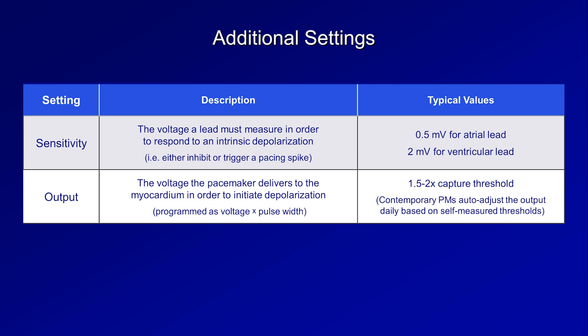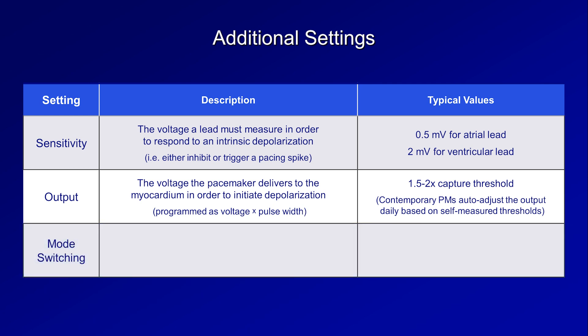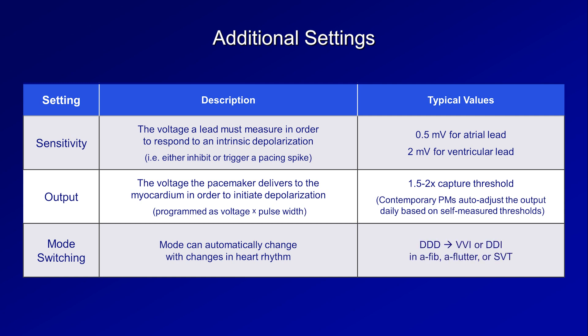The last additional setting of note is mode switching — a collection of settings that determine when the pacing mode should automatically switch from one to another with changes in the heart's intrinsic rhythm. For example, in a particularly common mode switch, a pacemaker in DDD mode will switch to either VVI or DDI if sinus rhythm were to convert into atrial fibrillation, atrial flutter, or another supraventricular tachycardia, in order to prevent extreme ventricular rates.